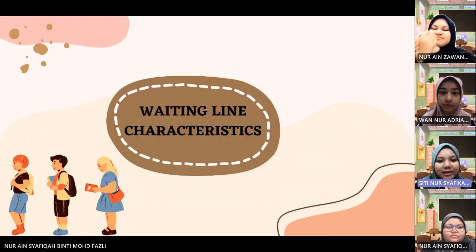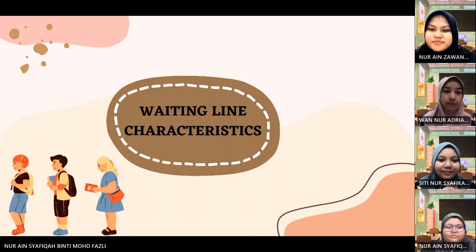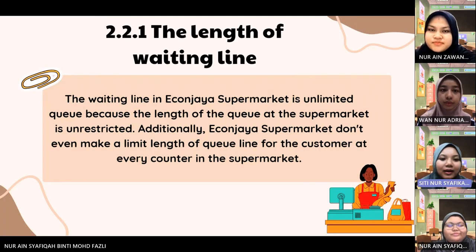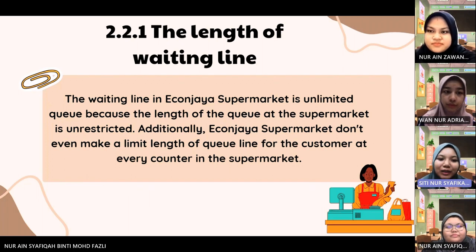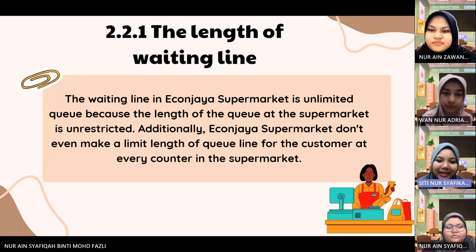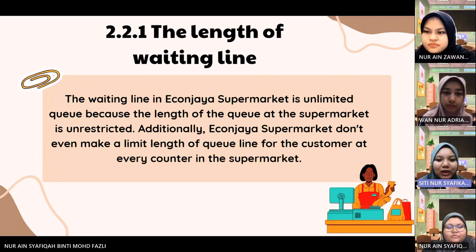Next, I will present about waiting line characteristics. The waiting line in Akon Jaya Supermarket is an unlimited queue, because the length of the queue at the supermarket is unrestricted. Additionally, Akon Jaya Supermarket does not impose a limit on the length of the queue line for customers at every counter in the supermarket.